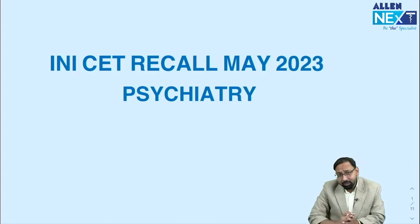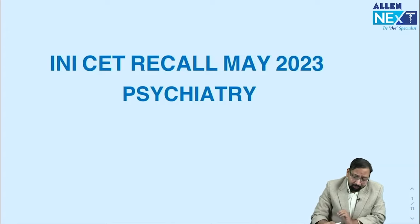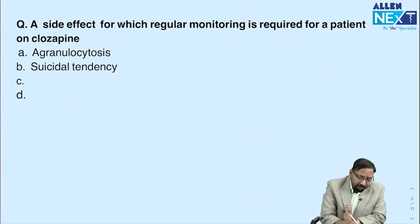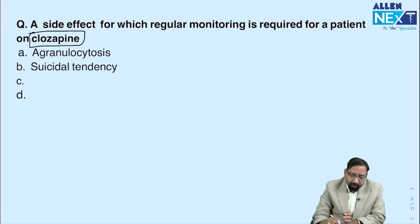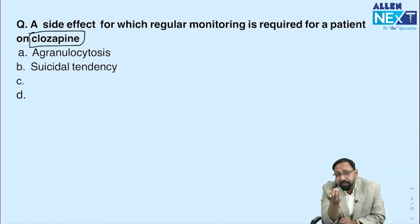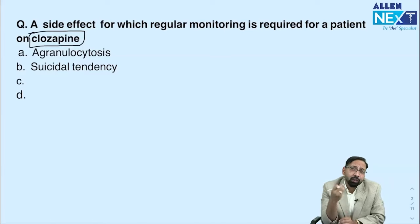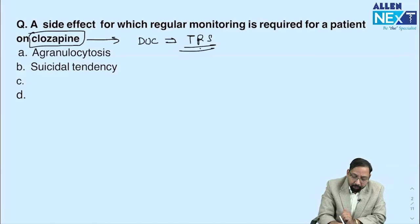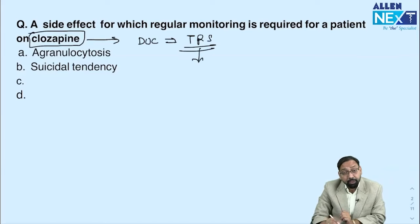We are going to discuss psychiatry goal questions starting with question number one, a repeatedly asked topic. In the 2023 NEET exam, the same question was asked in a slightly different way. The question is: a patient is taking two antipsychotics for four to six weeks but with no benefit — which drug will you give? Clozapine is the drug of choice for treatment-resistant schizophrenia.